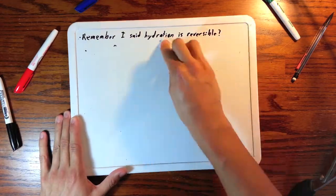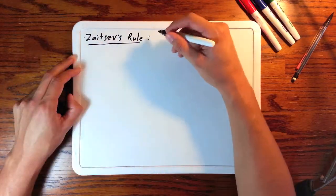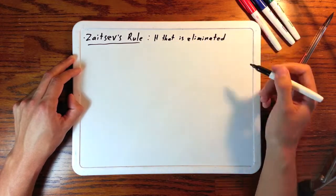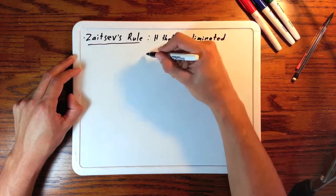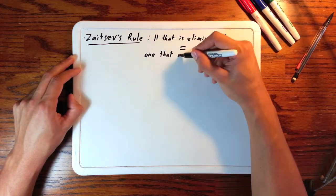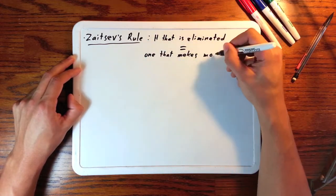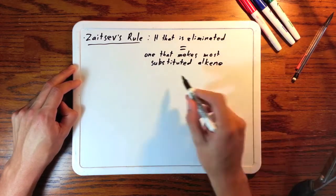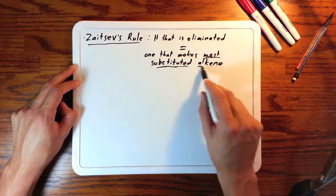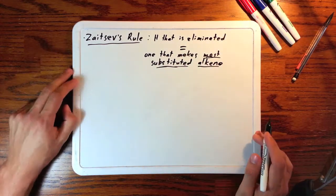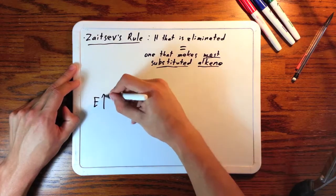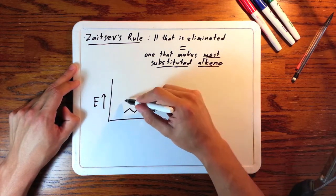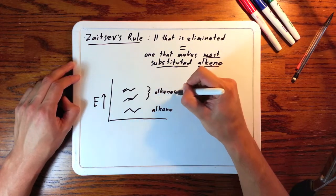Arrow push your eyeballs over here and I'll show you why. Zaitsev's rule, slightly restated, says that the H that is eliminated is the one that makes the most substituted alkene. It was a long time ago, early in the days of chemistry, so he did not attempt to explain why — he just noticed that it was true.